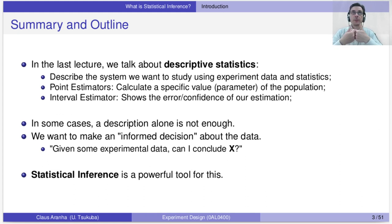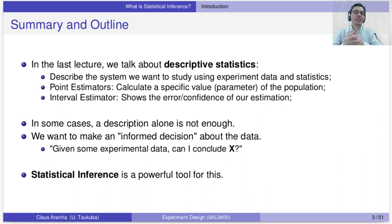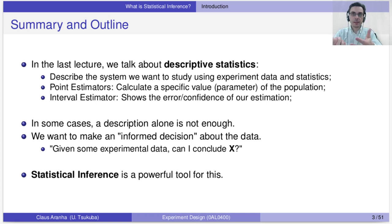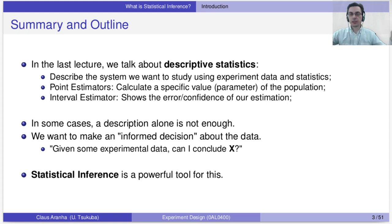Now, this is already something very good that you can use to describe systems that you are studying under experiments. But sometimes this is not enough. Sometimes we don't want only to describe a system — we want to make a decision. For example, we may want to say: is this program taking longer than necessary? Is this program effective enough, precise enough to satisfy some sort of task? The descriptive statistics will not give you that answer. They just say these are the possible values. So you need something a little bit more, and statistical inference — which is the tool that we are going to study today — is one of the ways that we can do that.